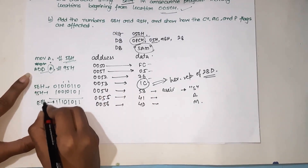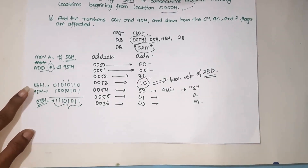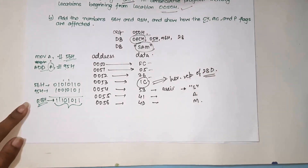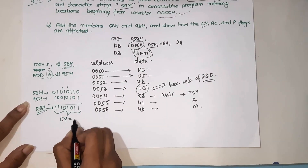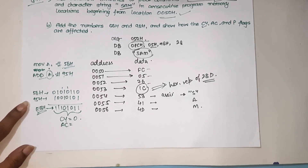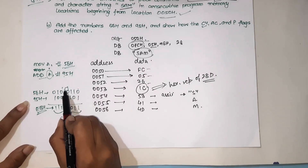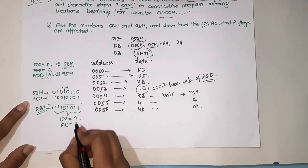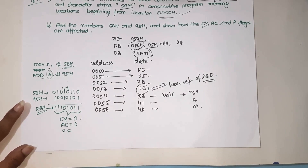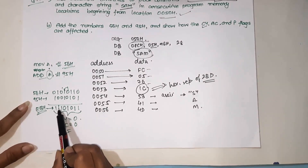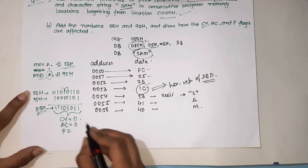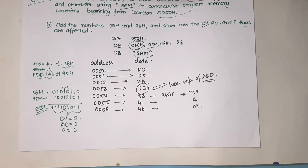These are our data bits D0 through D7. The carry flag is set when there is a carry out beyond D7 — but here there is no carry beyond D7, so the carry flag is 0. The auxiliary flag is set when there is a carry from D3 to D4 — there is no such carry here, so auxiliary flag is also 0. For the parity flag — counting the ones in the result EBh (1110 1011), there are 6 ones, which is even, so parity flag is 0. I hope you understood how to solve this. For any queries, write in the comment section. See you in the next lecture, bye bye.